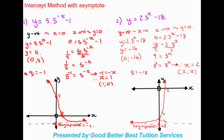Just like that we finish plotting both exponential graphs using the intercept method, which we only apply when asymptotes are present. Remember: if you can't find the answer using the intercept method, fall back on the table method, as you can use it to plot any equation. Thank you for joining — I hope this lesson helped you learn how to plot exponential functions.